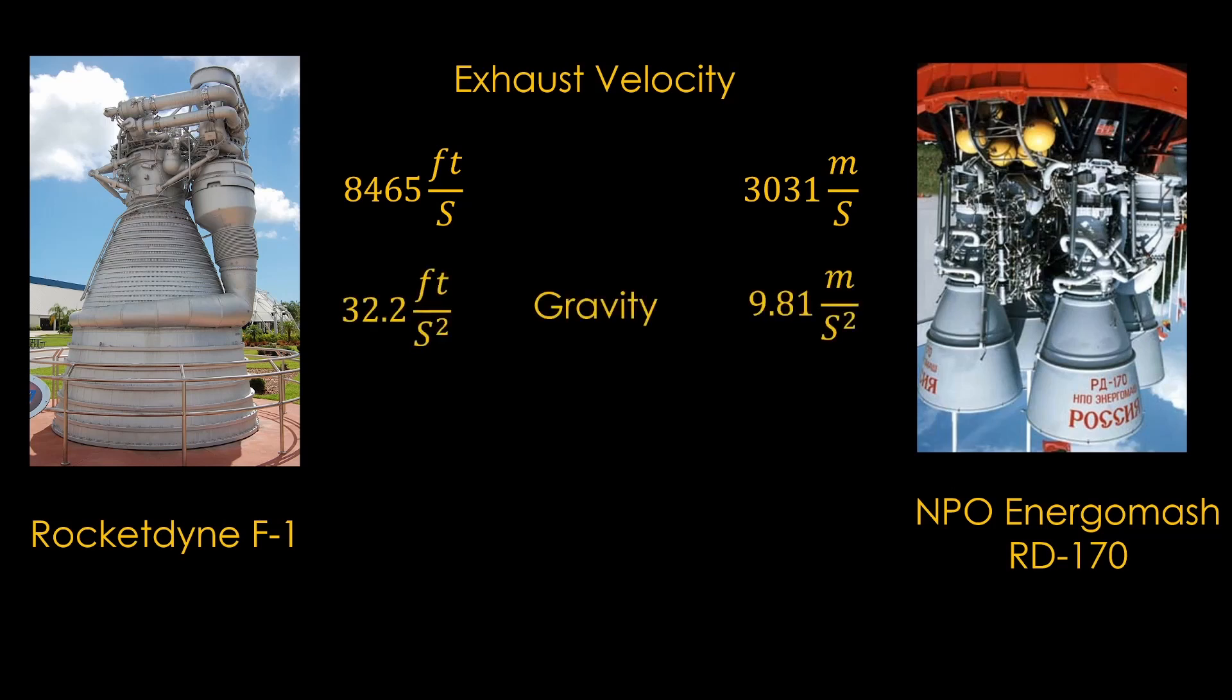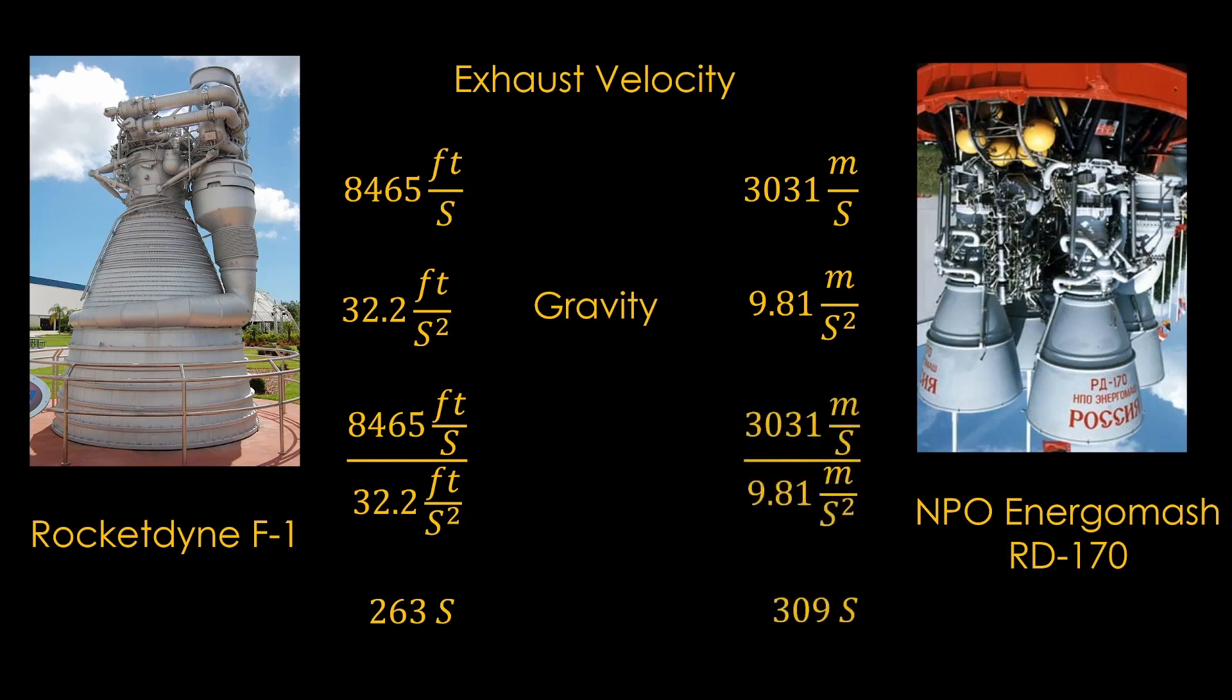We know that the acceleration due to gravity uses those units, with 32.2 feet per second squared in imperial units, and 9.81 meters per second squared in metric units. Take the F1 exhaust velocity and divide that by gravity, and we get 263 seconds. Do the same operation for the RD-170, and we get 309 seconds. This is of course the specific impulse of the engine, and since the RD-170 has a higher specific impulse, it has a higher exhaust velocity and is therefore more efficient when it comes to how much mass it uses to generate a given amount of thrust.